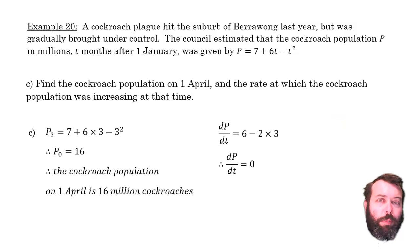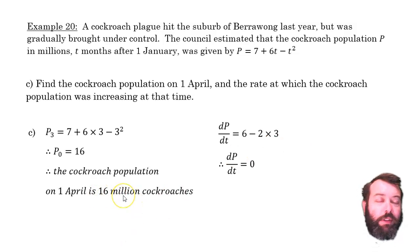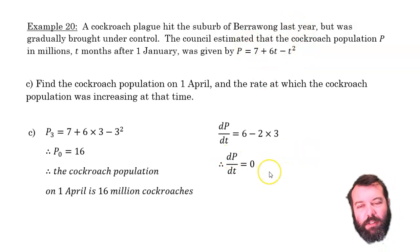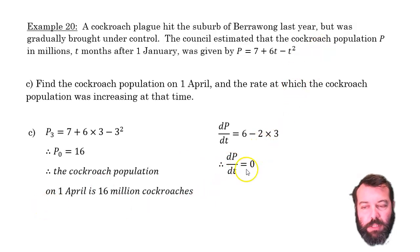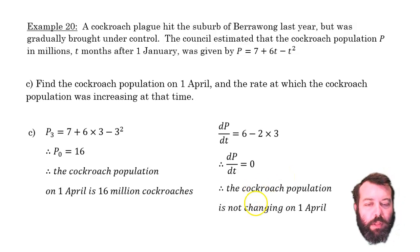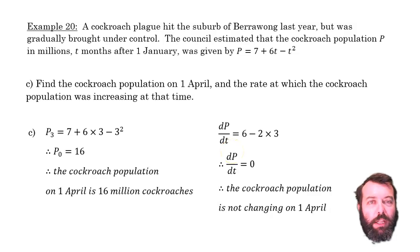The population has risen up until it reaches 16 million, but it's no longer increasing. Since this is a quadratic, it's not going to stop and start increasing again — that's the maximum. So the maximum population will be 16 million cockroaches. We found the population by substituting into the function, and the rate of change by substituting into the derivative.